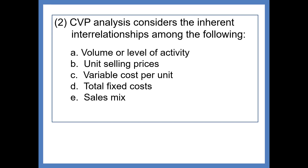CVP analysis considers the inherent relationships among the following variables: sales volume, selling price, variable cost per unit, total fixed cost, and sales mix. This is a profit planning tool and these are the variables that go into calculating items in an income statement — sales would be volume times sales price, for example. So we will be analyzing these variables and their effect on profit.